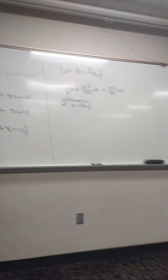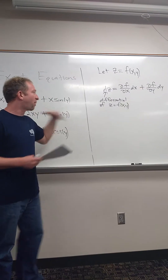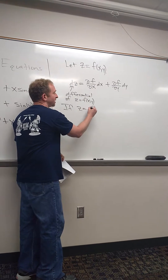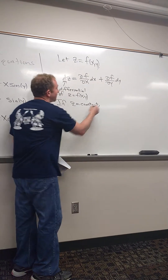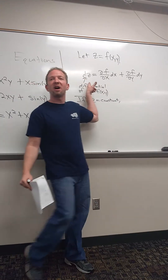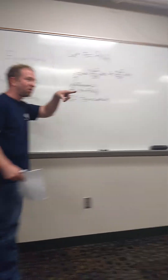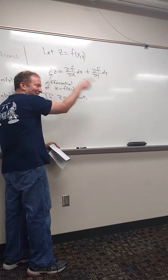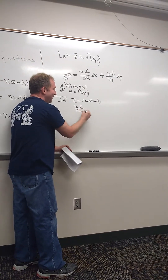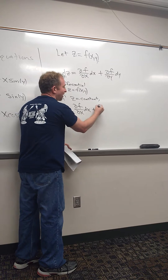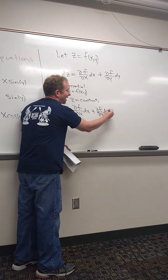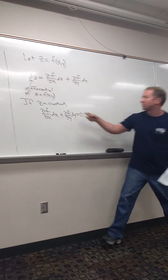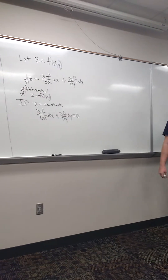So the part we care about is when z is constant. If z is constant — like if it's equal to c for some constant — what do you think dz is going to be? Zero. Good. So del f del x dx plus del f del y dy is equal to zero. If z is constant, dz is zero, and I put the zero over here.